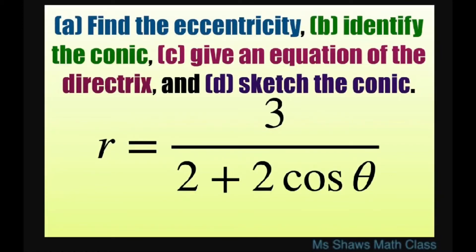Hi everyone! We're going to look at r equals 3 divided by 2 plus 2 cosine theta and find the eccentricity, identify the conic, give an equation of the directrix, and sketch the conic.